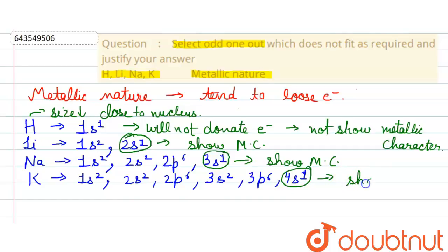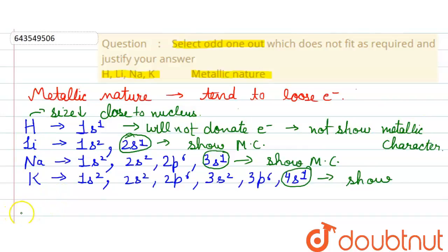Therefore, the odd one out is hydrogen, because hydrogen cannot donate its electron easily and does not show metallic character. The other three elements — lithium, sodium, and potassium — can all show metallic character and have good metallic nature. So our answer is hydrogen, the first option.